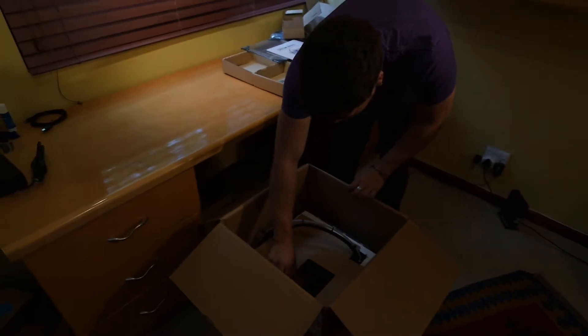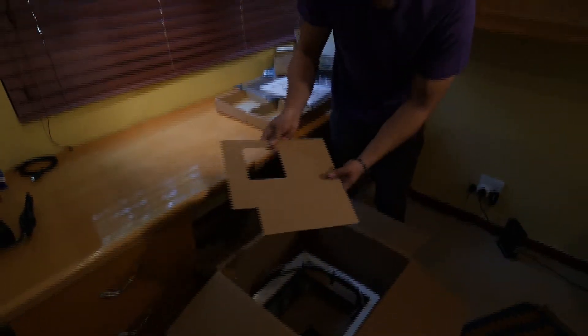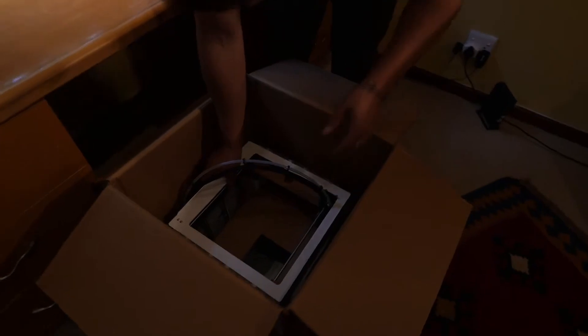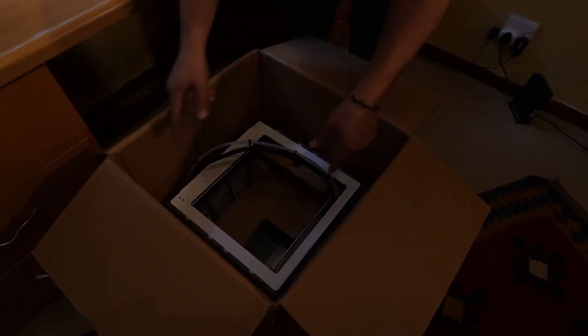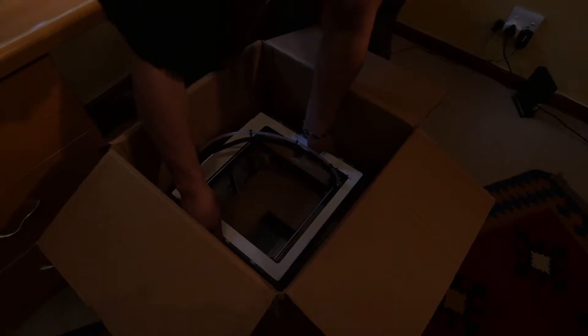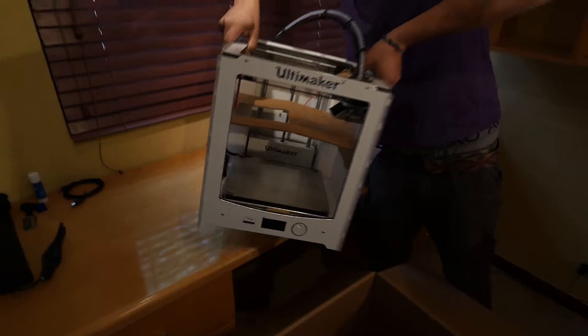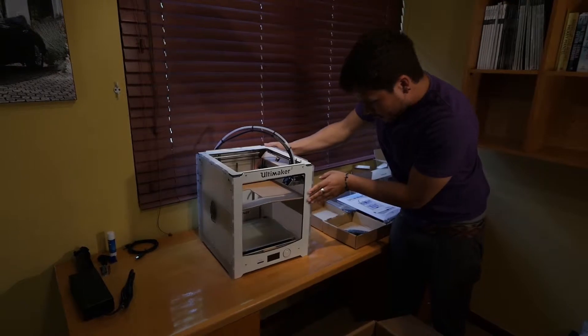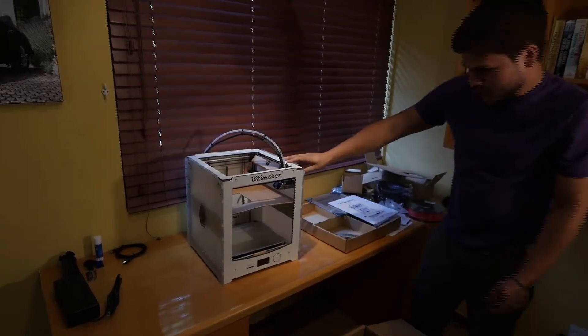So now to take out the printer itself. We just take off this piece of cardboard on the top here and put that to the side. And then, when you're lifting the printer out the box, try and lift it on the frame. And don't touch any of the accessories or things like that. Just be careful and pull it out the box. And then, onto our table here. Our nice new Ultimaker 2 printer.